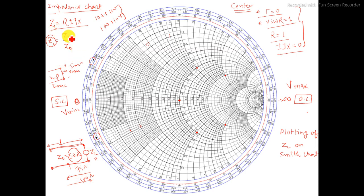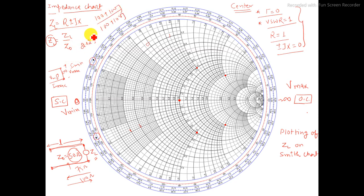The normalized value is given as ZL divided by Z0. So capital ZL equals r plus or minus jx divided by Z0 gives you the normalized value. For example, if we divide 100 plus 100j by 50, we get 2 plus 2j. If it is 100 minus 100j, we get 2 minus 2j.